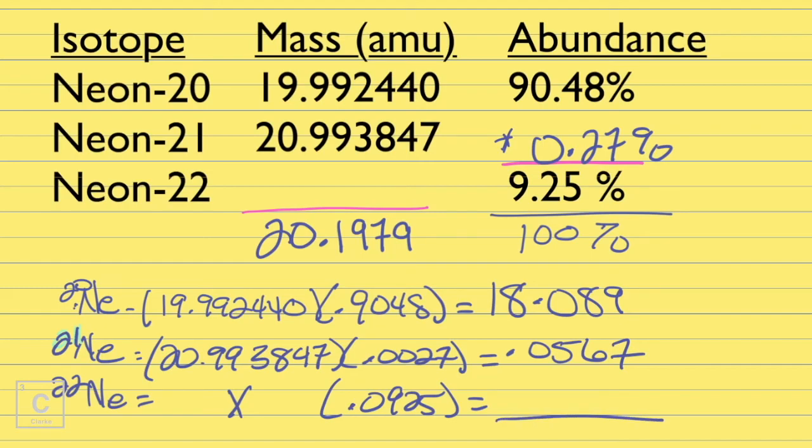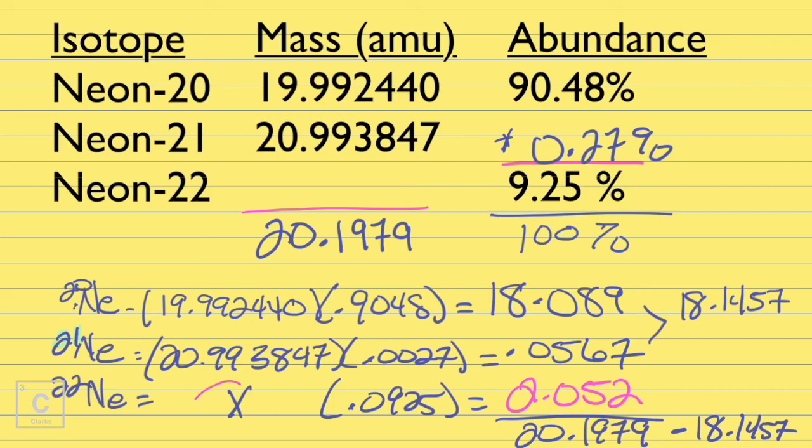And again, we know that when we add this, this, and whatever this is, it's got to equal the average atomic mass. And we said the average atomic mass from the periodic table is 20.1979. So again, we can add and subtract. So I'm going to add 18.089 plus 0.0567. And I'm getting 18.1457. Now we need to subtract those. So 20.1979 minus 18.1457. Okay, so I'm getting 2.052. So now we've got this last little bit. And y'all, I'm running out of room.